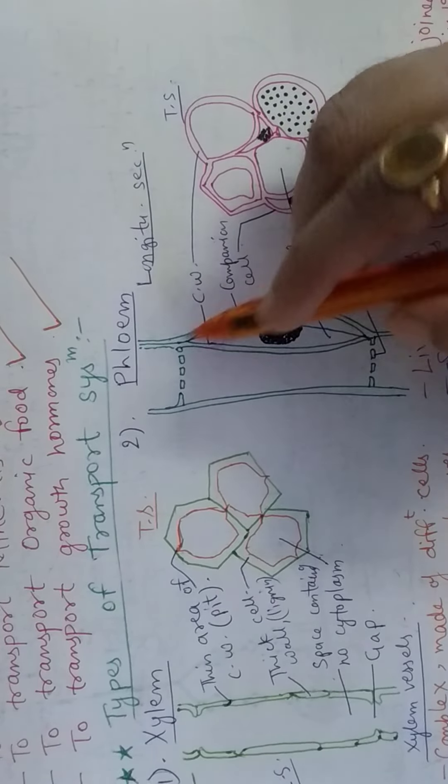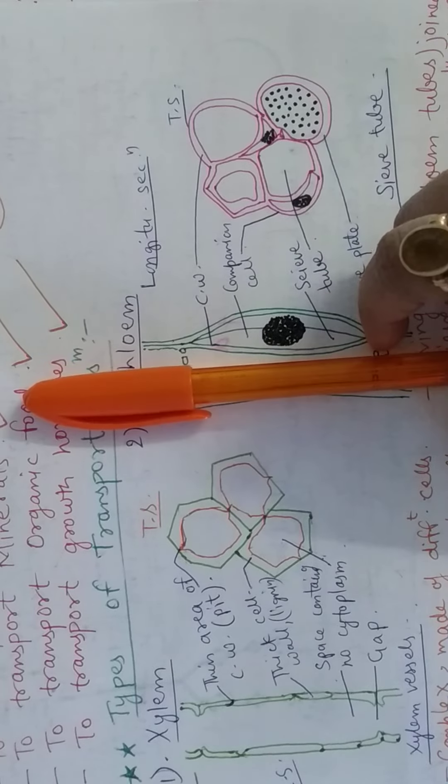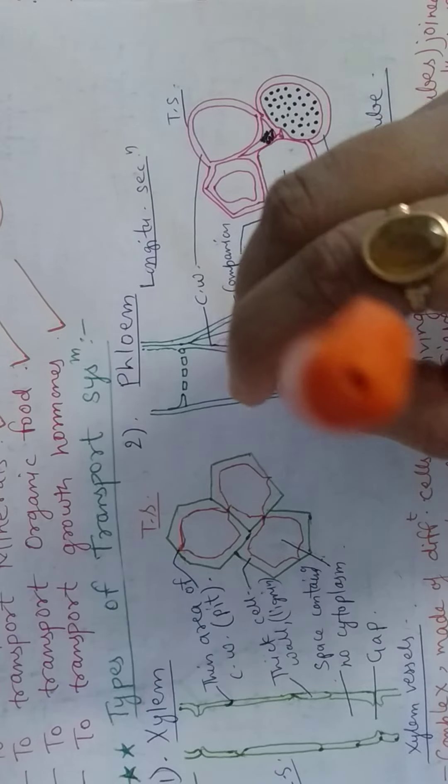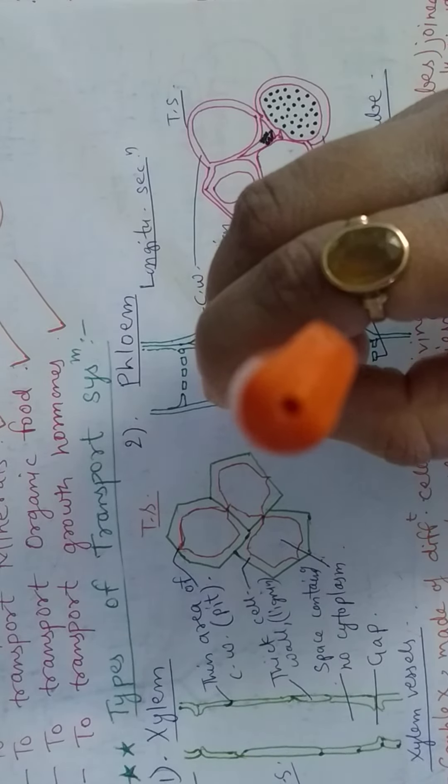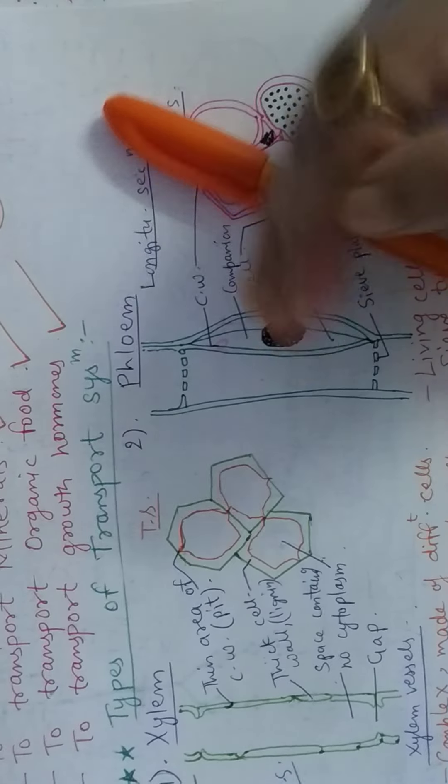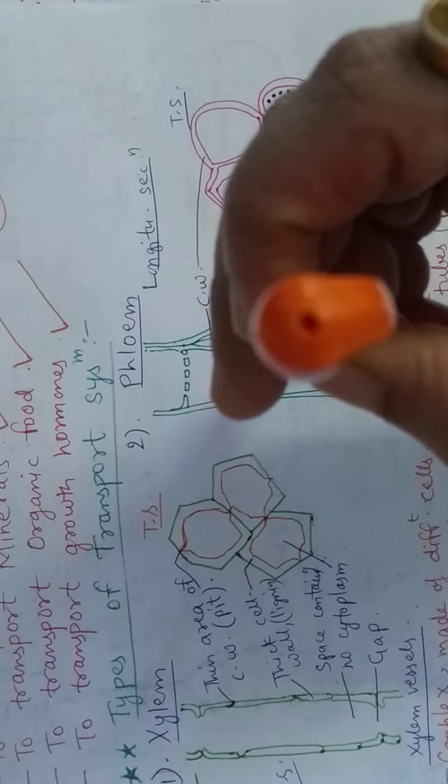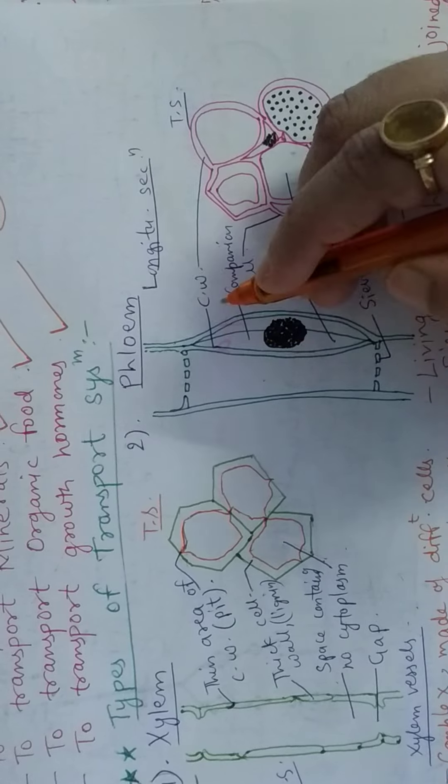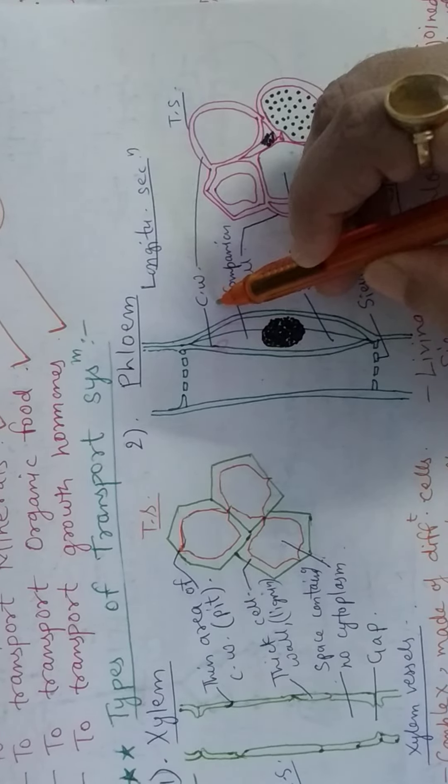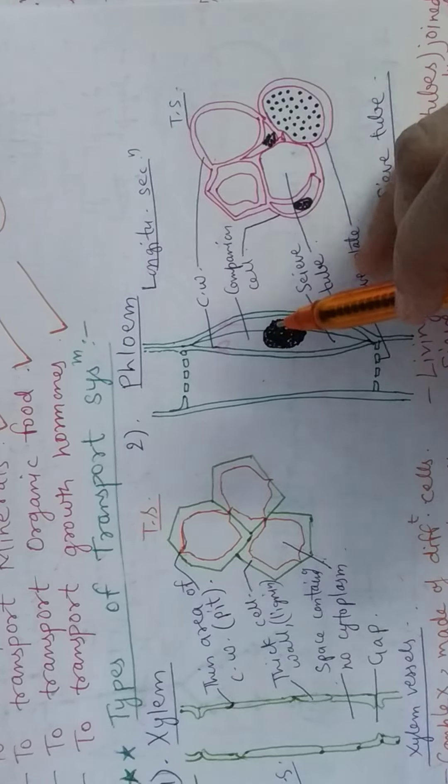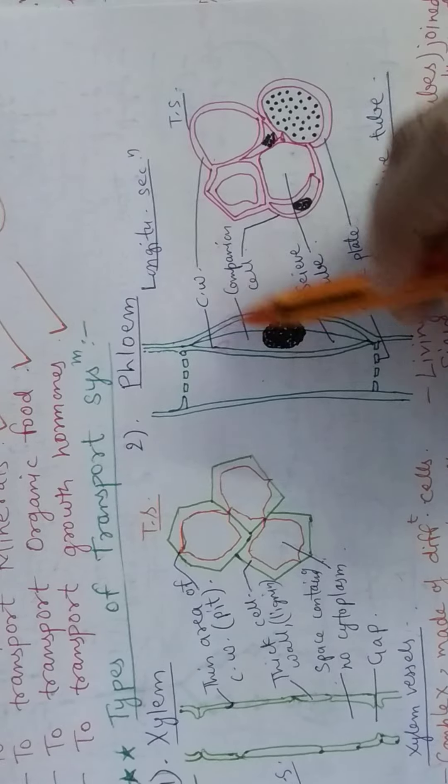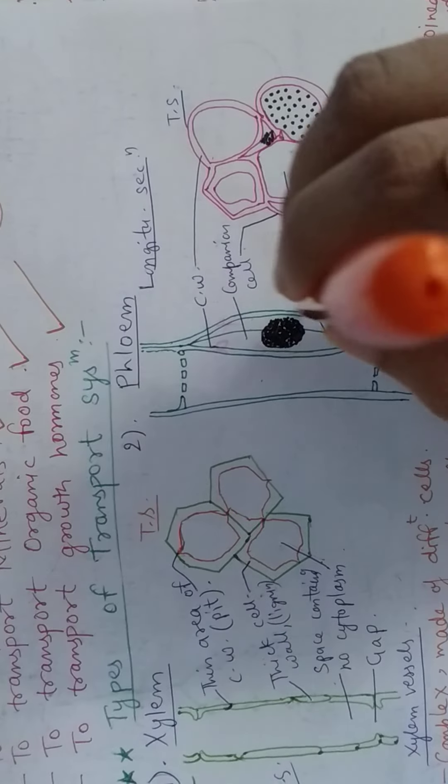If we talk about phloem, this is a longitudinal section and this one is our transverse section. I have cut it from here and see. What will happen here? There will be cell walls present in both of them. There are companion cells. We are seeing sieve tubes and then we are seeing these cells.